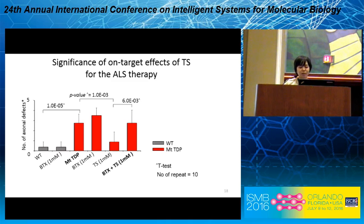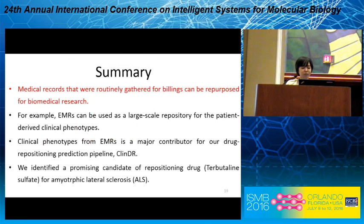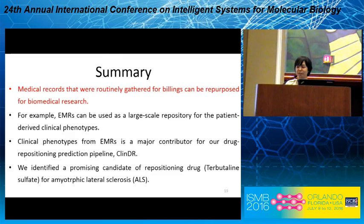In addition, beta-2 adrenergic receptor is a novel target for ALS. For that reason, our collaborator, a bench scientist, started a new project studying the biological mechanism. In summary, medical records routinely gathered for billing can be repurposed for biomedical research. EMRs can be used as a large-scale repository for patient-driven clinical phenotypes. Clinical phenotype from EMR is the major contributor of our predictor, and we found a promising candidate for ALS patients and a new target.